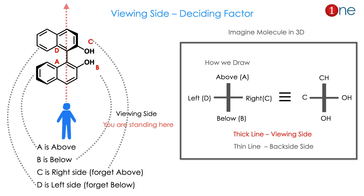Now let us see the important thing: the viewing side. It is a deciding factor for R and S — you must master it. The viewing side is the side from which you are seeing the molecule. Here I have given a binaphthyl molecule: you are seeing it from the top, so the bottom is group A, the right-hand side is C, and the left-hand side is D. To draw in three dimensions to two dimensions, you use thick lines and thin lines. A thick line means you are near to the molecule; a thin line means you are away from it. So above is the CH group (A), below is OH (B), right side is C, and left side is D. You must master the viewing angle — it is the deciding factor.